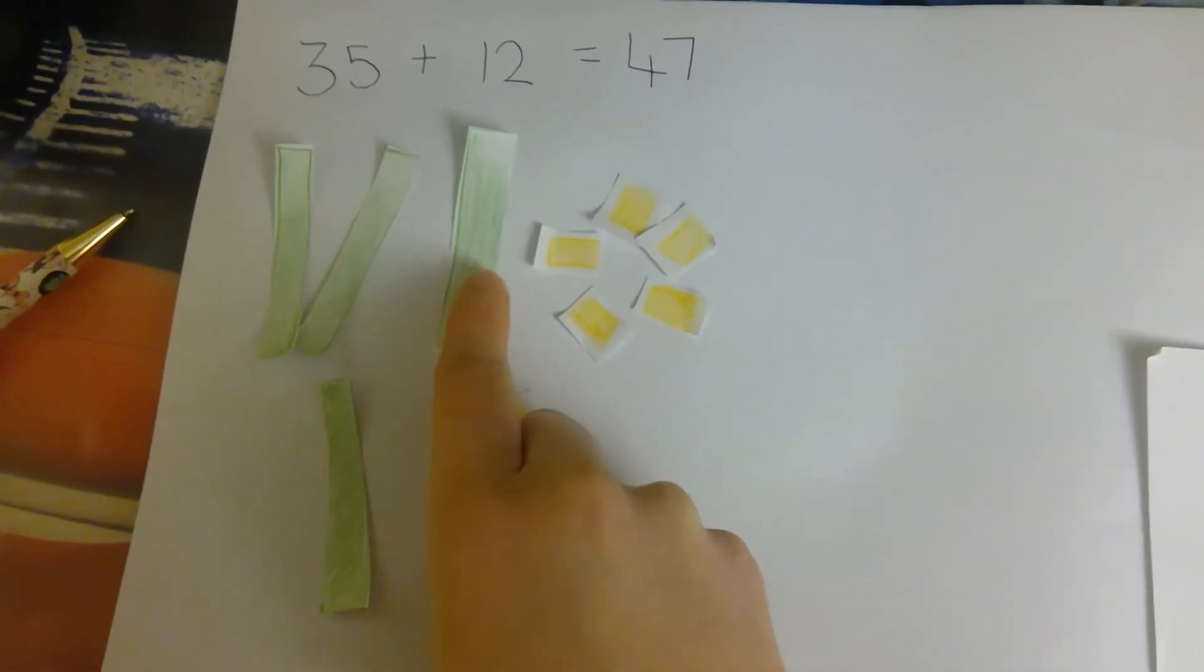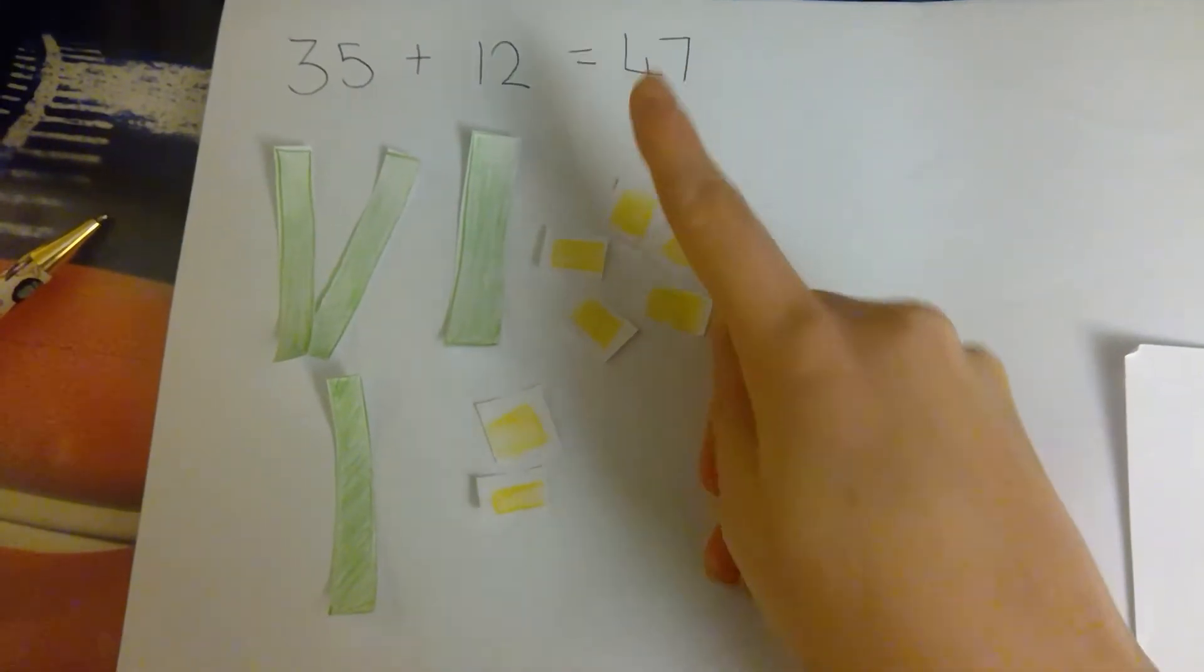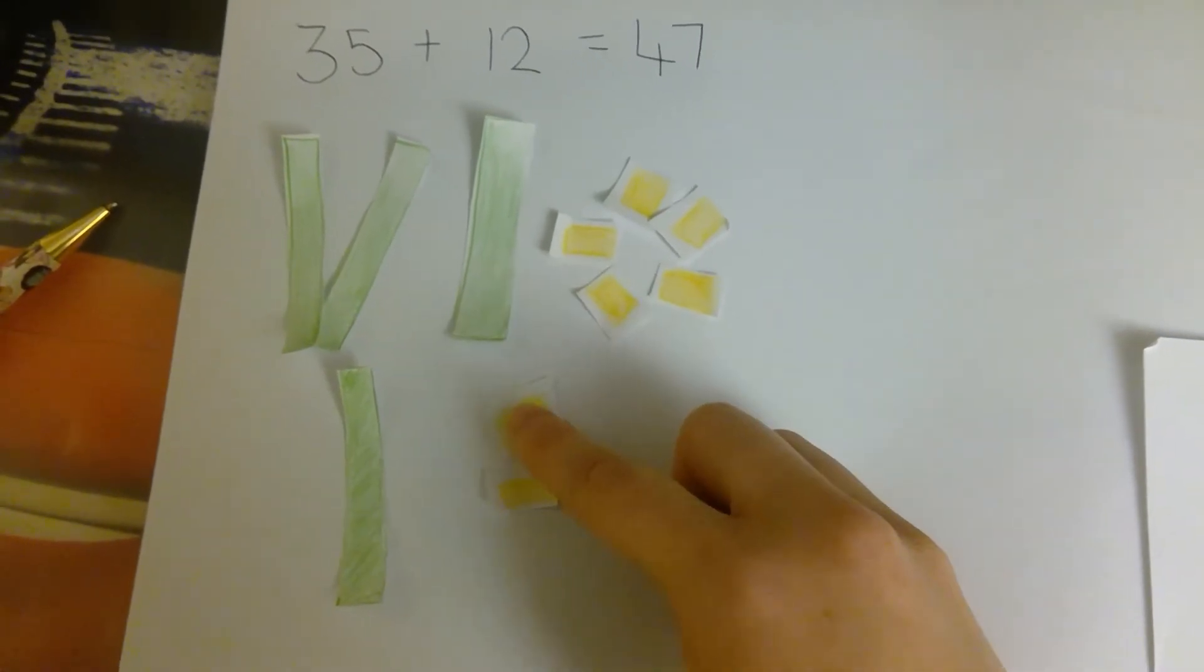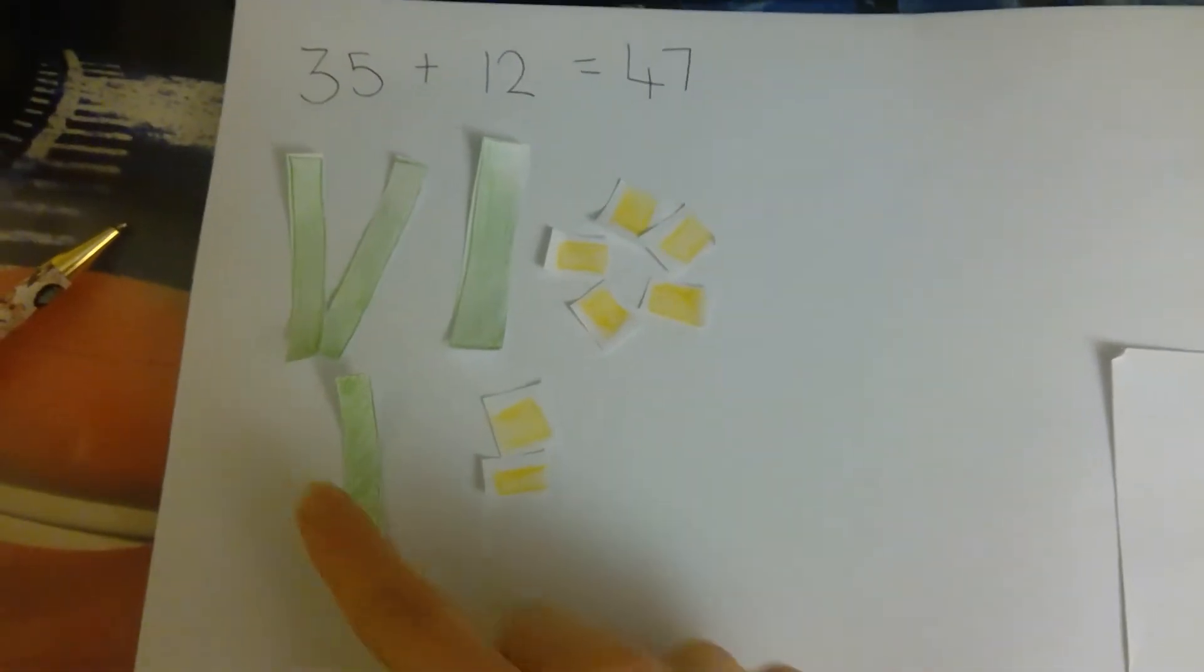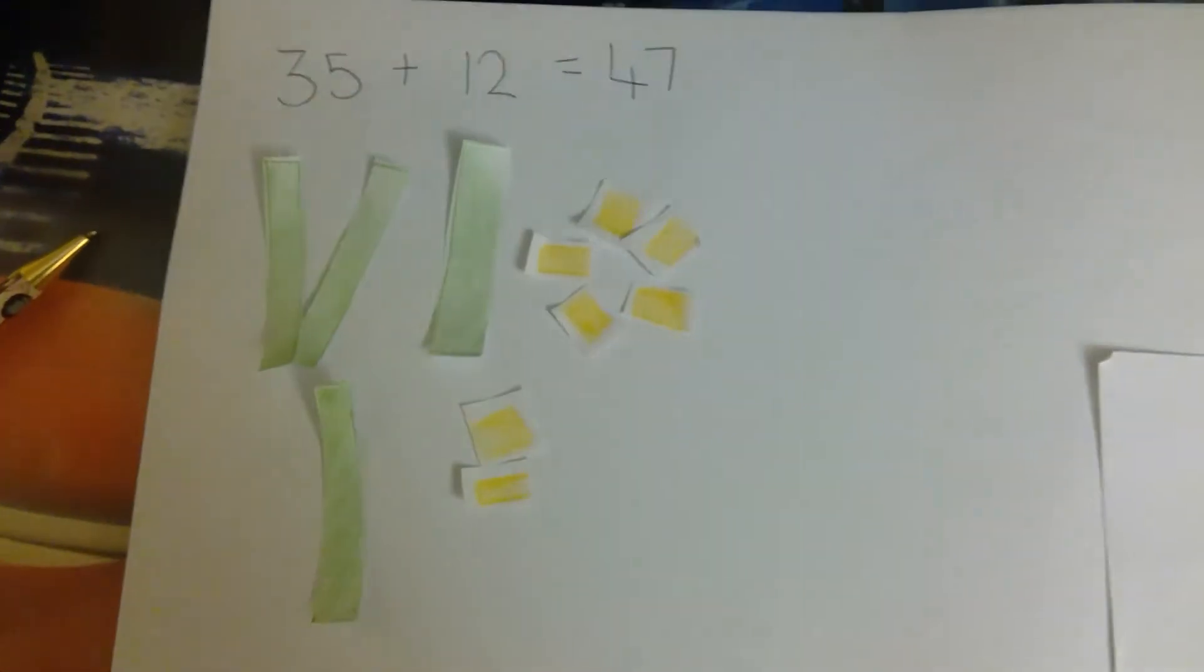1, 2, 3, 4 tens. 7 ones. 1, 2, 3, 4, 5, 6, 7. 4 tens. 7 ones. 47.